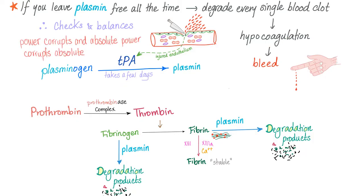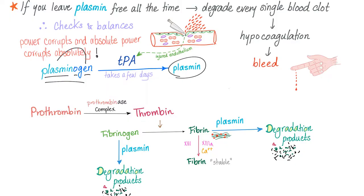But this is not the case. Why? Because there are checks and balances on plasmin. Plasmin is not free all the time — in fact, it's present in a precursor inactivated form called plasminogen, which will give genesis to plasmin. Who will activate plasminogen into plasmin?